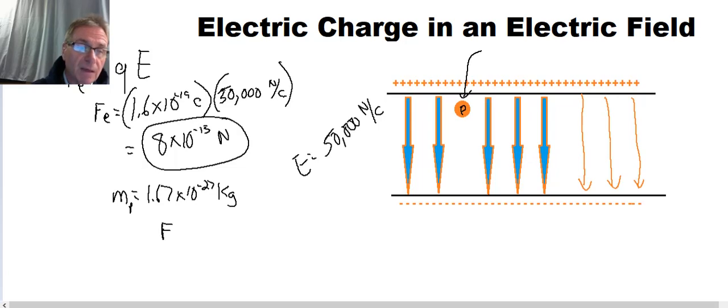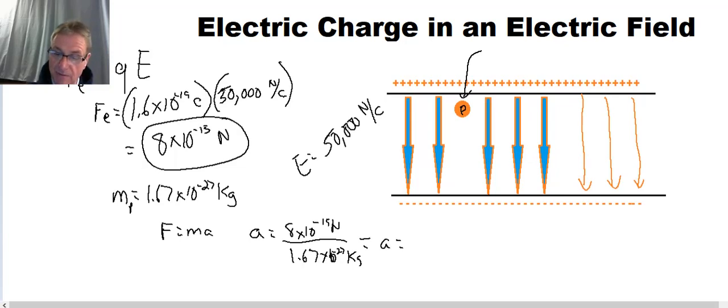And using our old equation F equals MA, we can figure out the acceleration of our proton. So F equals MA or A equals F divided by M. Well, F is just 8 times 10 to the negative 15th newtons, and M in this case is 1.67 times 10 to the minus 27th kilograms. And when we do the math on this, we get an acceleration equal to 4.79 times 10 to the 12th meters per second squared.